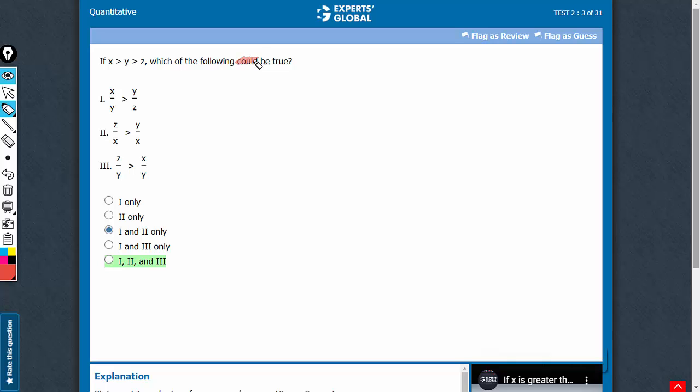This is a could-be question, and therefore we need only one case for each of these three cases to be proven correct. When we cannot find even one case, we put a cross mark. Otherwise, we put a check mark. That is our approach towards solving this question.